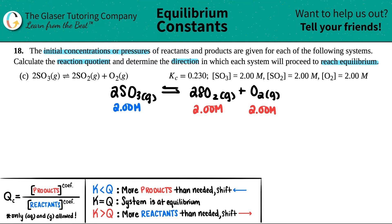So basically, what the question is asking for is, from these initial amounts, which direction are we going to go? Are we going to go from reactant to product? Are we going to go to the forward reaction, or are we going to go backwards?